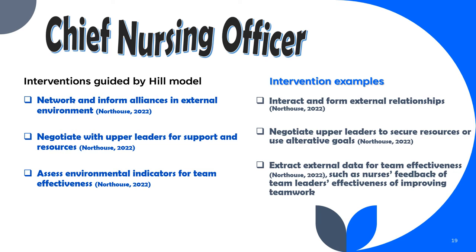The intervention's guided Hill model will begin with the chief nursing officer, followed by a nurse executive, a nurse director, a human resource director, and a quality coordinator director. The provided interventions will be to network and inform alliances in the external environment, negotiate with upper leaders for support and resources, and assess environmental indicators for team effectiveness. The chief nursing officer will then interact and form external relationships, negotiate with upper leaders to secure resources or use alternative goals, and extract external data for team effectiveness such as nurses' feedback on team leaders' effectiveness in improving teamwork.